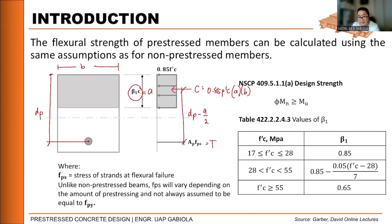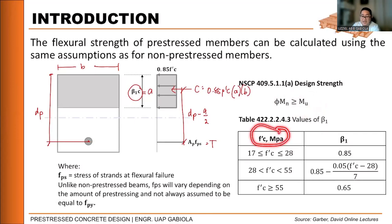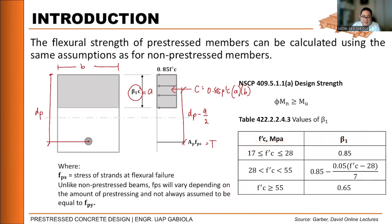According to NSCP 409.5.1.1, the design strength — the factored nominal moment — should be greater than the ultimate moment from load combinations. So the factored capacity of the section should exceed the loads, and as long as it is greater, the design is safe for flexure. The value of beta-1 depends on the compressive strength f'c — make sure to remember these formulas for the board exam.